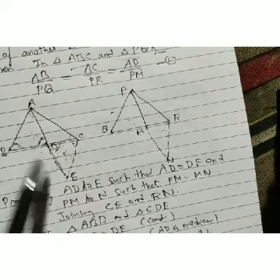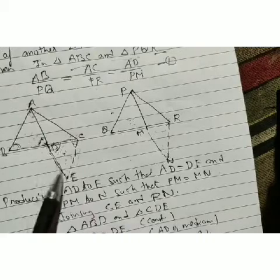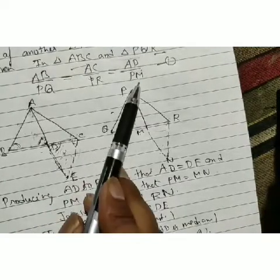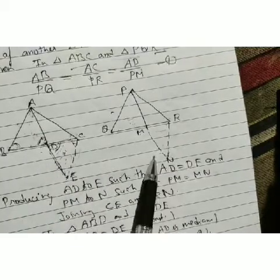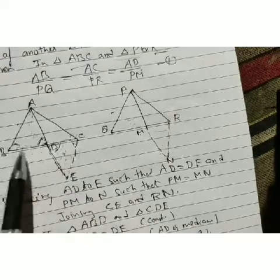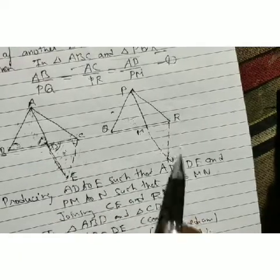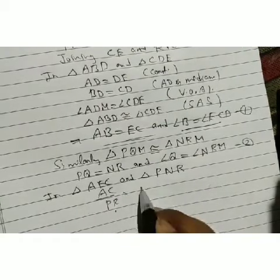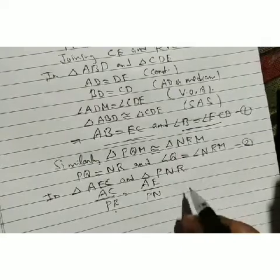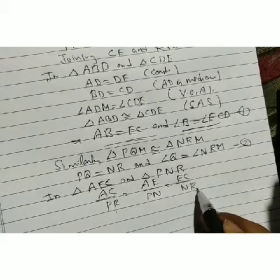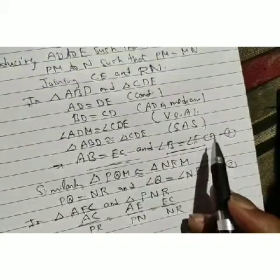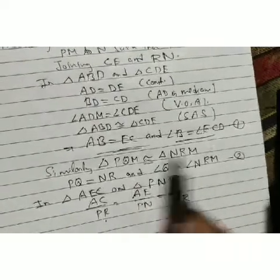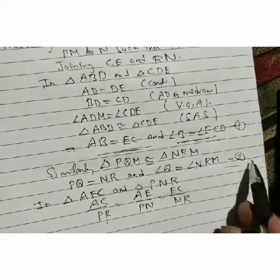Similarly, by joining BE and QN, we take triangle ABE and triangle PQN. In the same manner we can show these triangles are similar, giving angle 3 = angle 4.